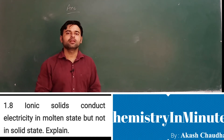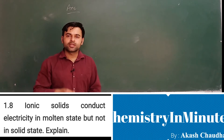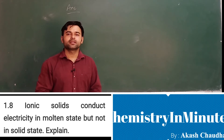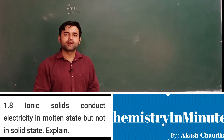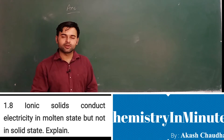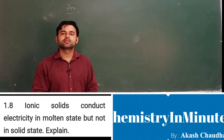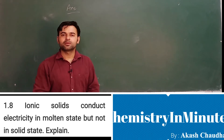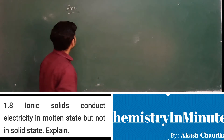In solid state, the ions are not free to move. In molten state, since the ions are free to move, they can carry charge and current can flow through them. But in solid state, the ions are not free to move, so charge cannot be carried and current will not pass through them. So let's write the answer to the question.